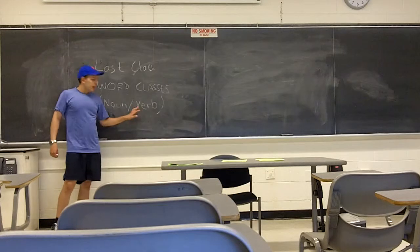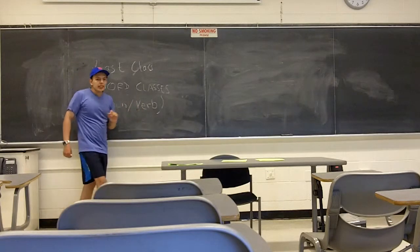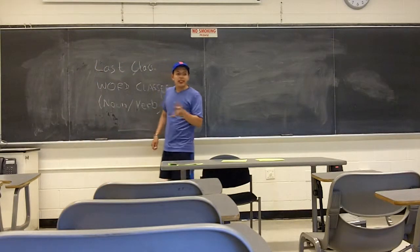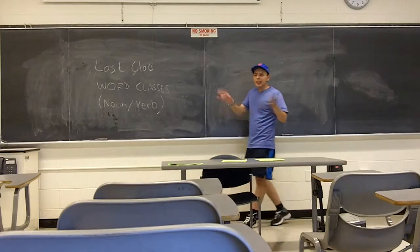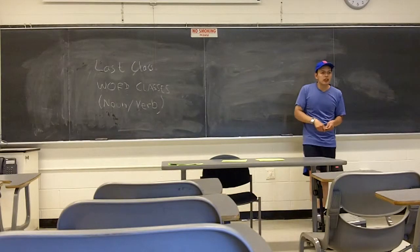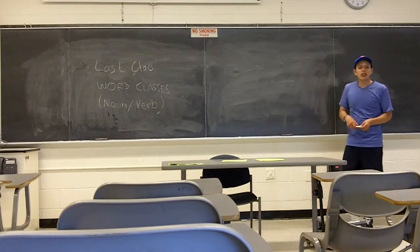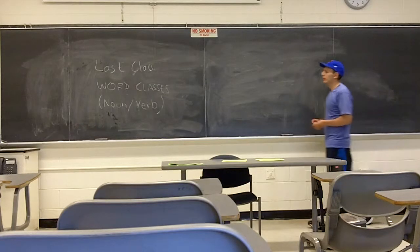And a verb — can you give me a verb in English? Action. Yes, a verb is an action. So what kinds of verbs do we have in English? Scream, walk, talk, work. Yes.